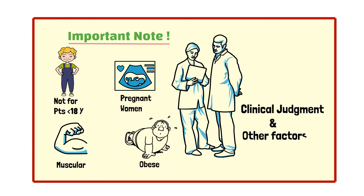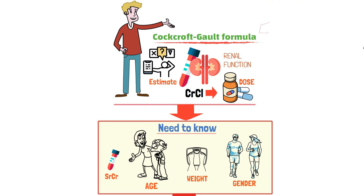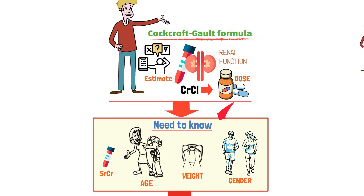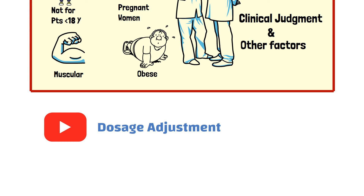In conclusion, the Cockcroft-Gault formula is a widely used method to estimate renal function and calculate the appropriate medication dose based on serum creatinine levels. By understanding how to use this formula, healthcare professionals can ensure that medication is administered safely and effectively based on individual patient factors. In the upcoming video, I'll demonstrate how to adjust the dosage of meropenem using it as an example — stay tuned and watch it when it's available.